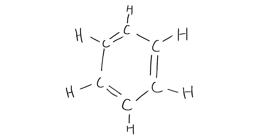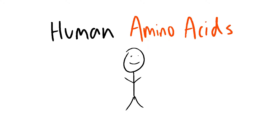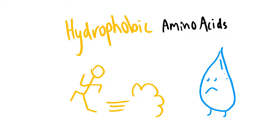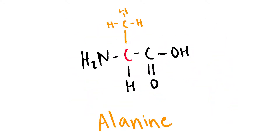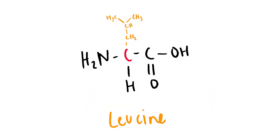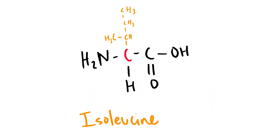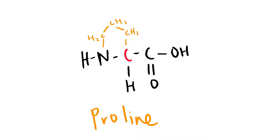Let's now talk about the 20 amino acids in humans. First, the hydrophobic or non-polar amino acids. The mnemonic for hydrophobic amino acids is GAVLIP: Glycine, Alanine, Valine, Leucine, Isoleucine, and Proline.